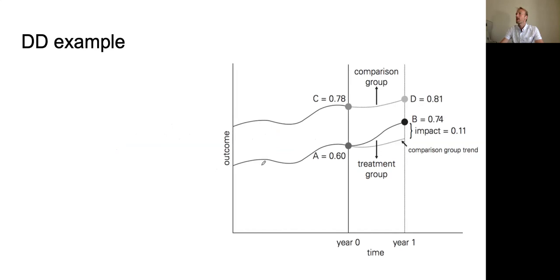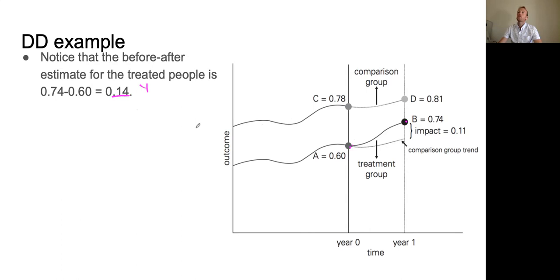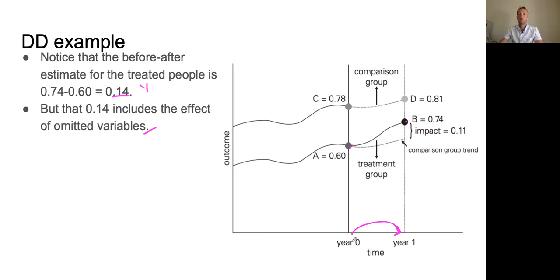Graphically it looks like this. There's a treatment group and in year zero their outcome at point A is 0.6. A year later we measure them and it's 0.74 — it went up. So our outcome variable Y went up 0.14 — fourteen hundredths. If we just did that, that would be a before-after estimate. But the 0.14 between 0.6 and 0.74 also includes the effect of omitted variables — maybe macroeconomic conditions changed, or a coronavirus pandemic swept through the town.